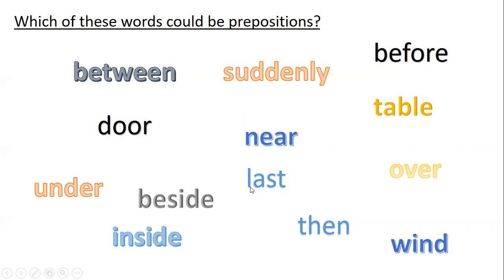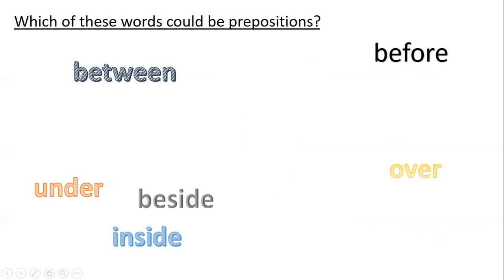The ones you should have written down are these six — they could all, if used in the right way, tell you where something is. For example: the chair is between the door and the table; the dog is underneath the table; the lamp is beside the drawer; the pen is inside the classroom; the bell went before break time; the bridge was over the river. They're not always prepositions — if you said 'the game is over,' that's not a preposition — but if it shows where something is, then it is.